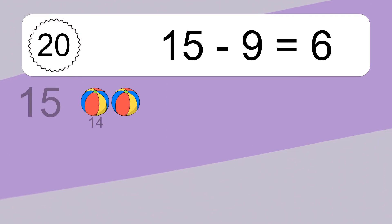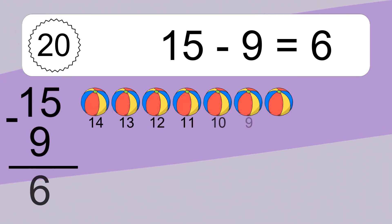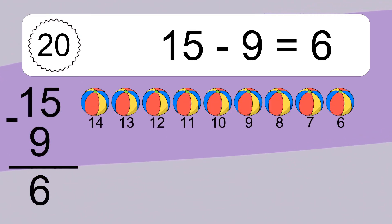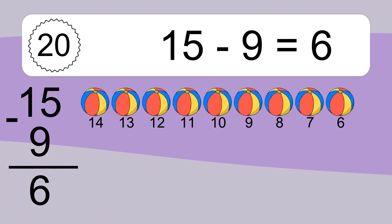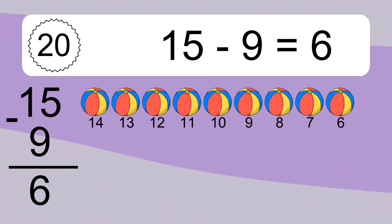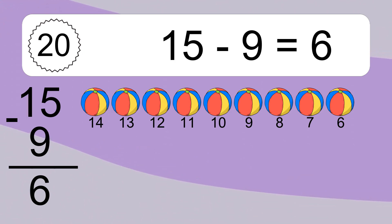15 minus 9 equals what? 15 minus 9 equals 6. Let's count it: 14, 13, 12, 11, 10, 9, 8.